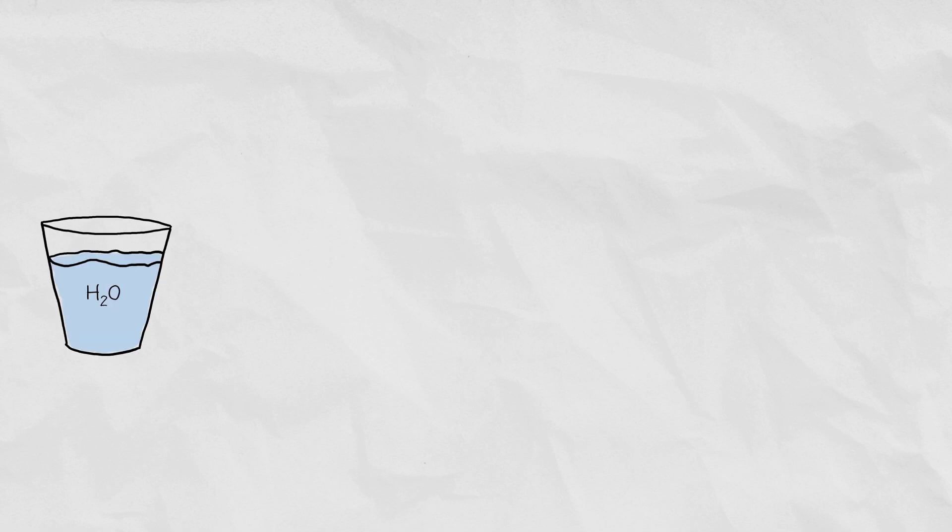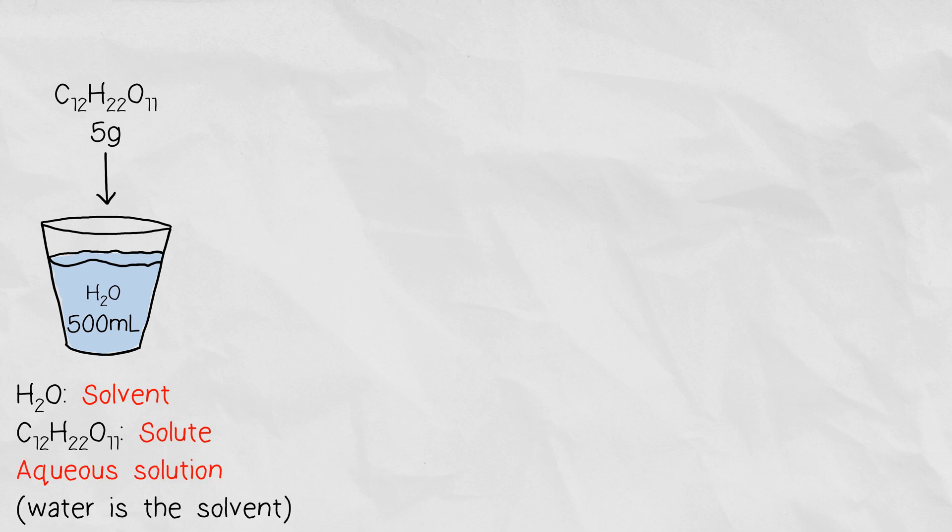If you have a glass of water, say 500 milliliters, and you add 5 grams of sugar, you'll have created a solution. The water is known as the solvent. It's the compound to which you add the sugar, which is known as the solute. The solute is generally a solid, but it can also be a liquid or a gas. So by adding a solute to the solvent, we create a solution. And since the solution involves water as the solvent, it has a special name. It's called an aqueous solution.